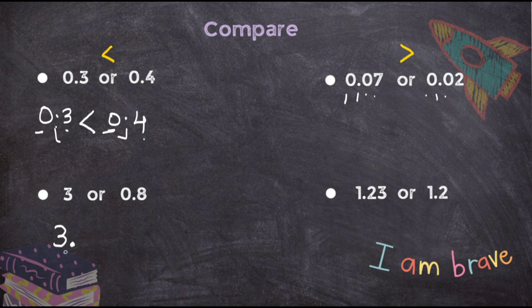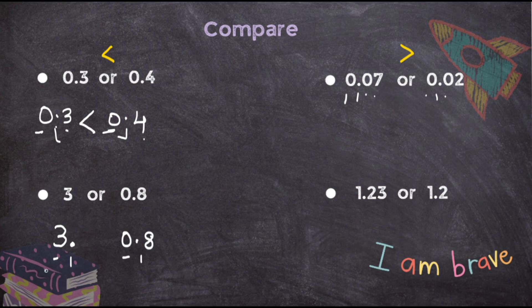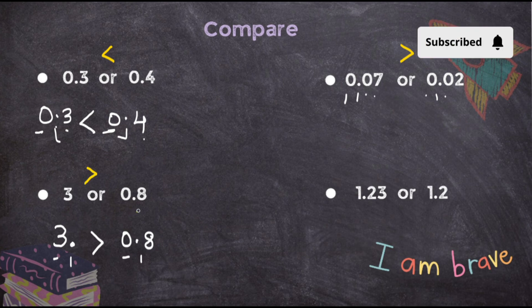So the decimal point here is after 3, making it 3. point — and the other number is 0.8. Now first find the decimal points on both sides. Check who is to the left: here it is 3 and here it is 0. You only tell me — who is bigger? It is 3. So 3 is greater than 0.8.